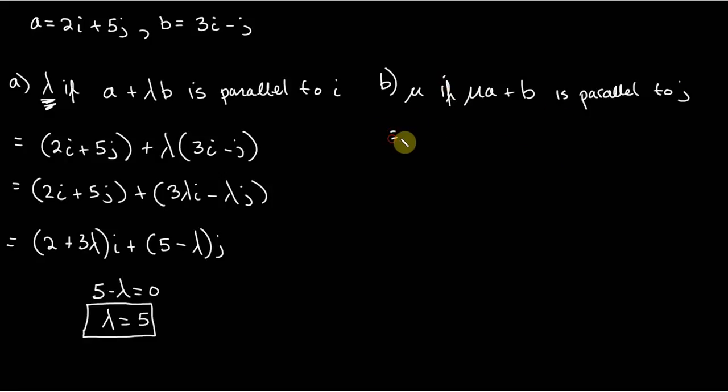And so again, first step really is just to focus on this bit of information right here. Here we have mu a, so we can just write mu times a. We know a, it's written up here, it's 2i plus 5j. And plus b, got b, which is 3i minus j. And we just use the distributive property, like so. And we just multiply that out. So we get 2 mu i plus 5 mu j plus our vector b, which is 3i minus j.